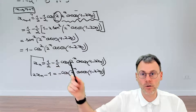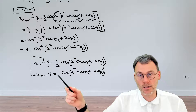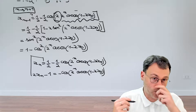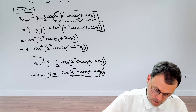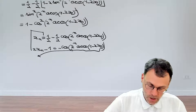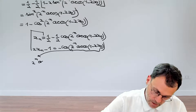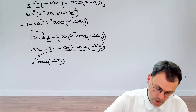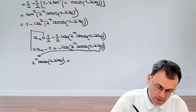We're slowly getting where we need to be, because we need an expression for two to the power of n times arc cosine, which we have here inside a cosine. There's nothing that an arc cosine can't fix: bringing this to the left-hand side,